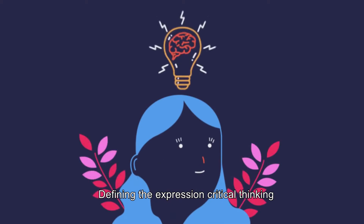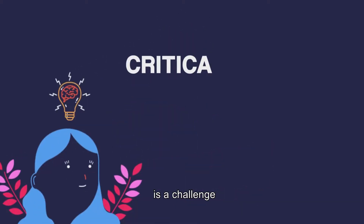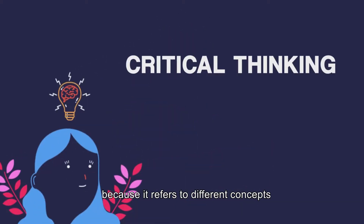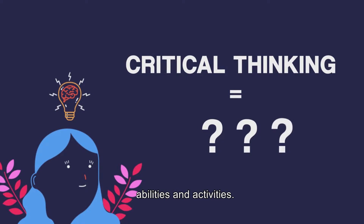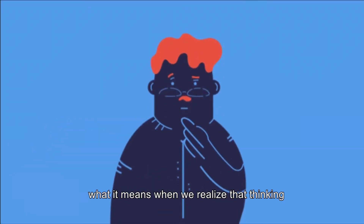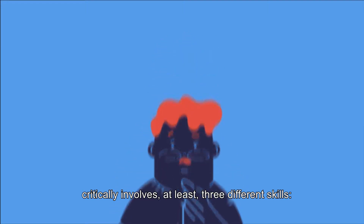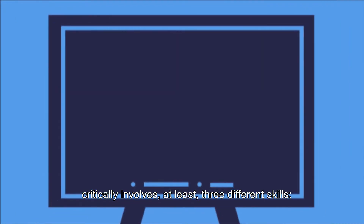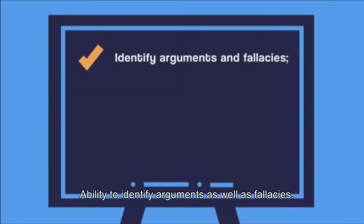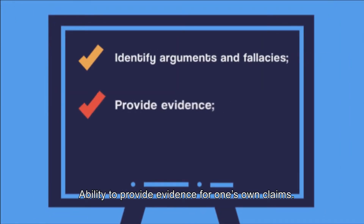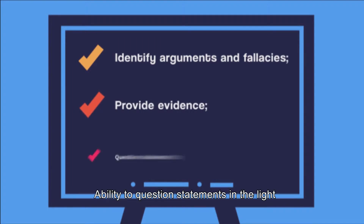Defining the expression critical thinking is a challenge because it refers to different concepts, abilities and activities. Nevertheless, we can begin to understand what it means when we realize that thinking critically involves at least three different skills: the ability to identify arguments as well as fallacies, the ability to provide evidence for one's own claims, and the ability to question statements in light of the best available information.